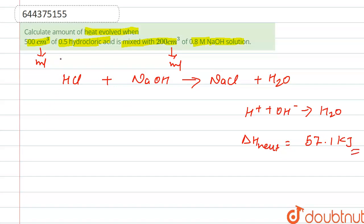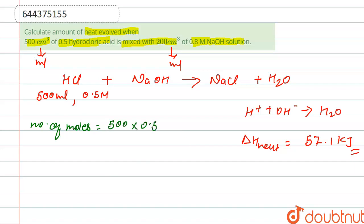Hydrochloric acid is given as 500 mL and 0.5 M molarity, so we can calculate the number of moles. Number of moles equals volume (in liters) into concentration: 500/1000 × 0.5 = 0.25 mol. HCl dissociates into H⁺ and Cl⁻, so this is the mole of H⁺ ion.